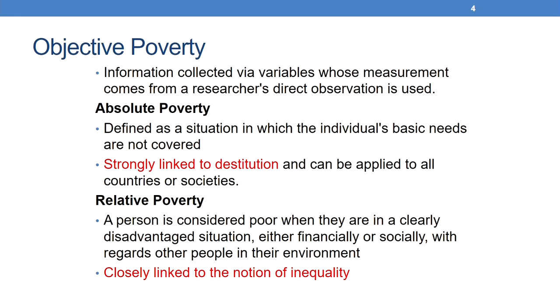Looking at objective poverty: objective poverty studies use information collected via variables whose measurement comes from a researcher's direct observation, giving a high degree of objectivity. The most commonly used variables are household income and sometimes expenditure. By applying an objective focus, an analysis of both absolute and relative poverty can be carried out. Let us look at what we mean by absolute poverty and relative poverty.